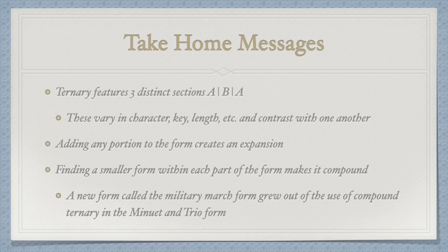In this video, we learned that ternary is a three-part form, diagrammed A-B-A. Unlike rounded binary, the sections are usually pretty distinguished from one another in a number of ways. If we add any part — like an intro, coda, or the like — our ternary form has become expanded. If within each section of the form we find a smaller form inside, we dub this compound ternary, just like the minuet and trio, which serves as the inspiration for our military march form. We'll get some more practice in class. But for now, that is all. Thanks for watching.